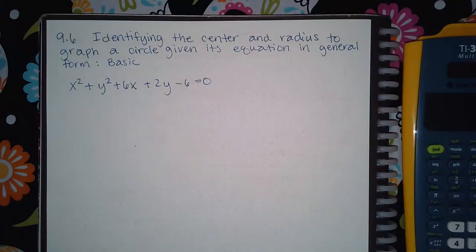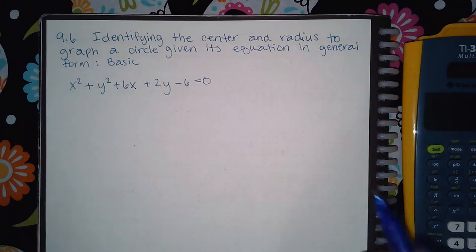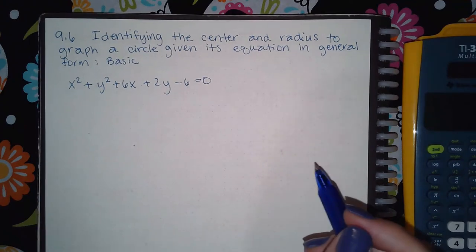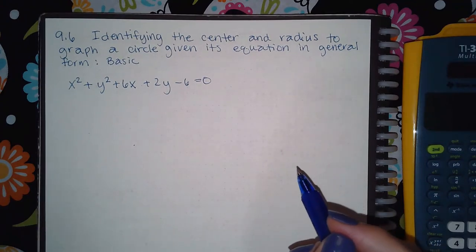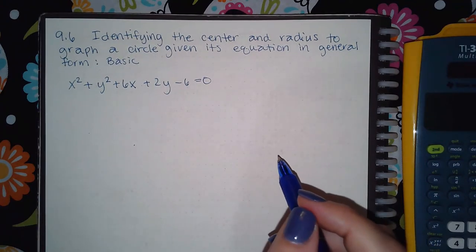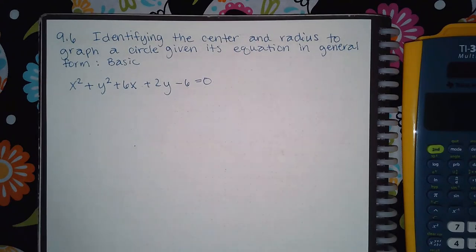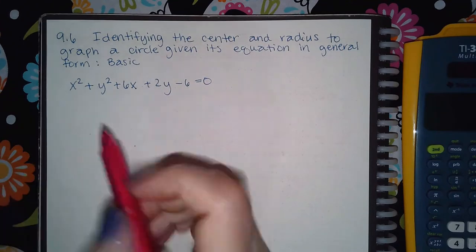Here we have section 9.6 — identifying the center and the radius to graph the circle given its equation in general form. In order to solve this, we actually have to get it into standard form.